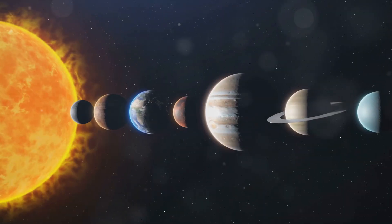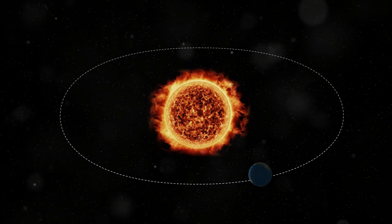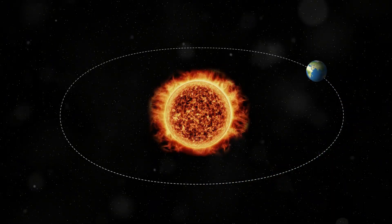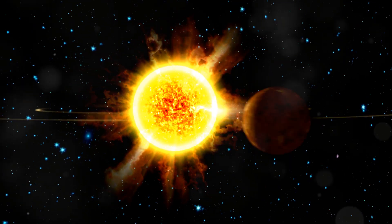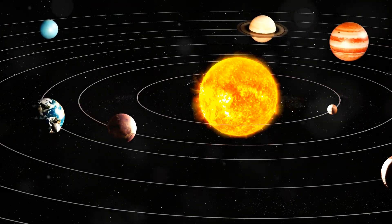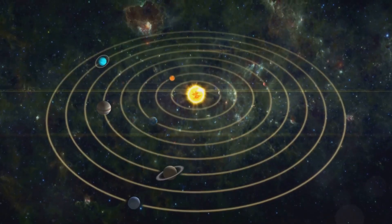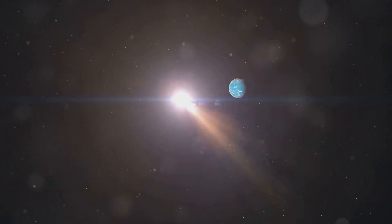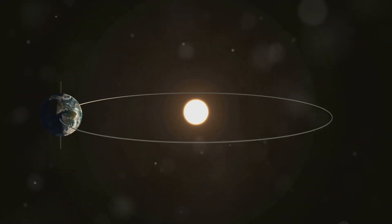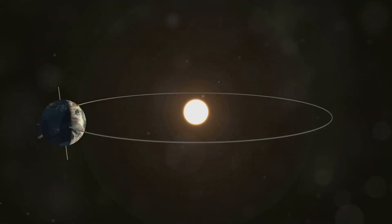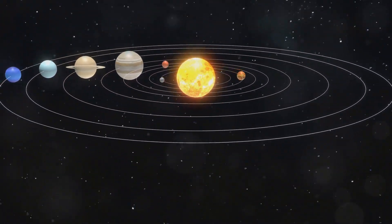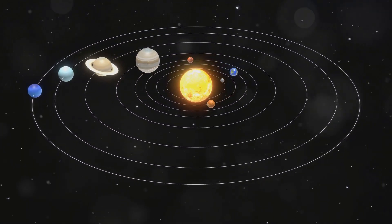Dimension 13: Orbital Revolution. Imagine Earth spinning like a top while also moving in a large circle around the Sun. This circular motion is what Russell called orbital revolution. It's the grand dance of planets around their stars, moons around planets, and even stars around the centers of galaxies. One complete revolution around the Sun marks a year. For Earth, this journey takes approximately 365 days. Just like with axial rotation, the duration of an orbital period or a year is not uniform across the cosmos.